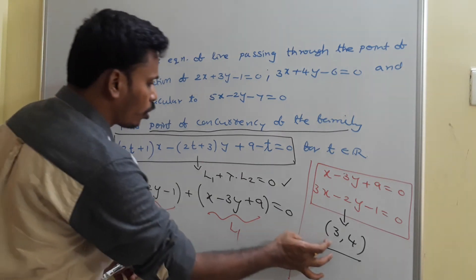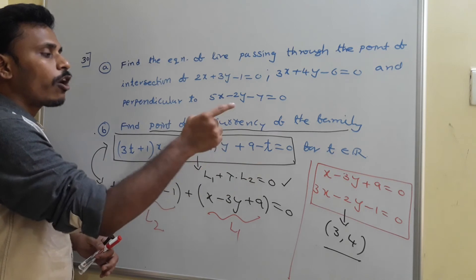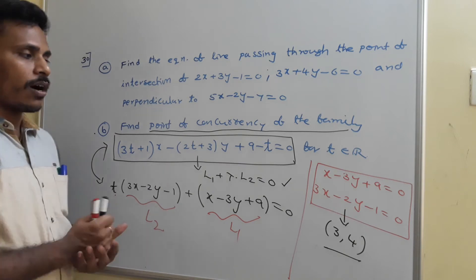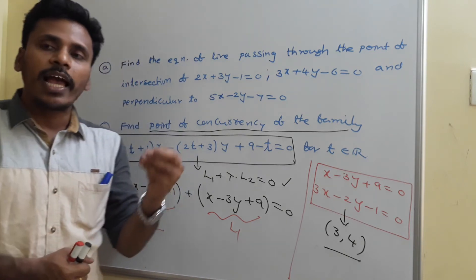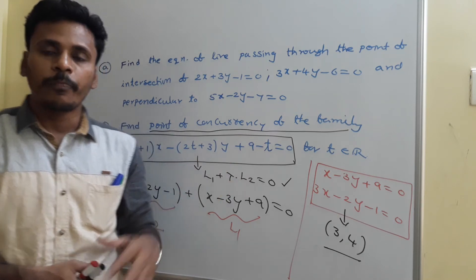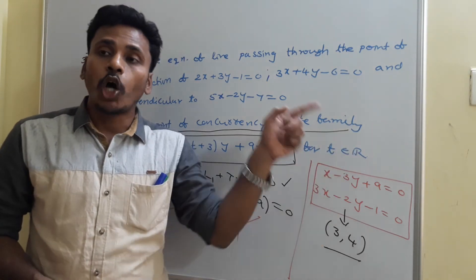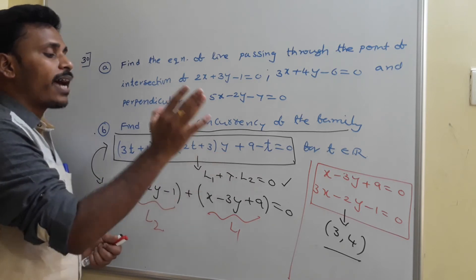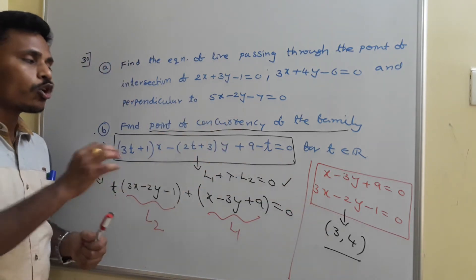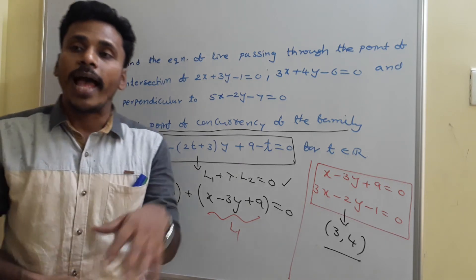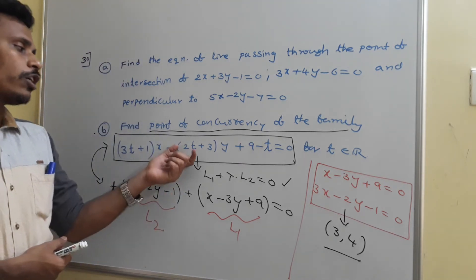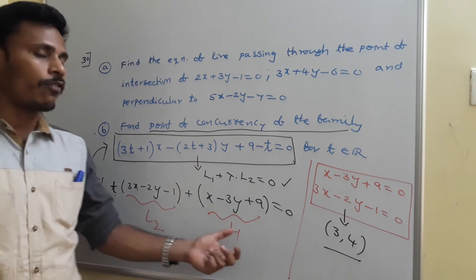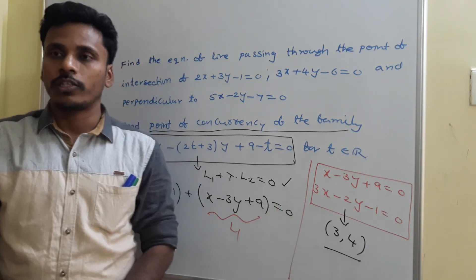So (3, 4) is the point of intersection, and (3, 4) is the point of concurrency of the family. If you take x equals 3 and y equals 4 in this family equation, without the involvement of t itself it is satisfied by that point — that's why it is called the point of concurrency. The procedure: convert the given equation into L1 plus lambda L2 equals 0, then find the point of intersection of L1 and L2, which represents the point of concurrency.